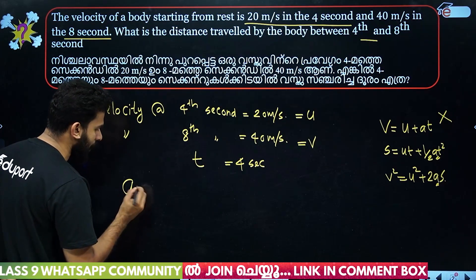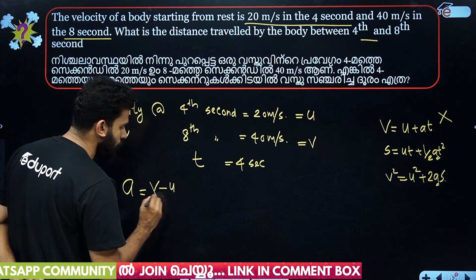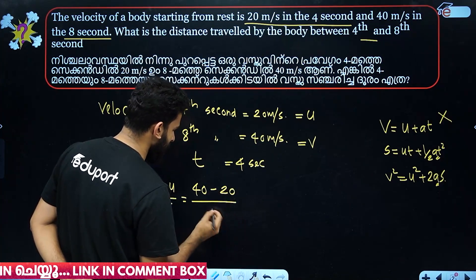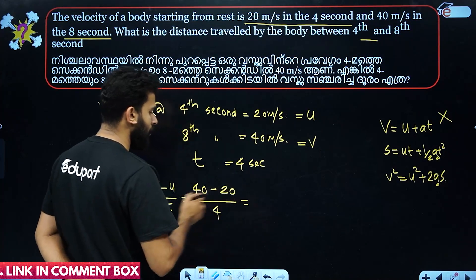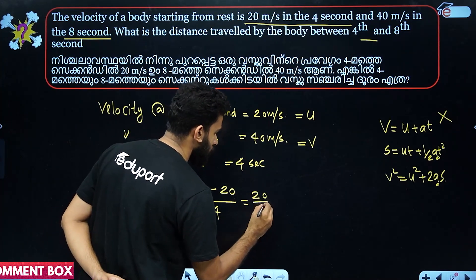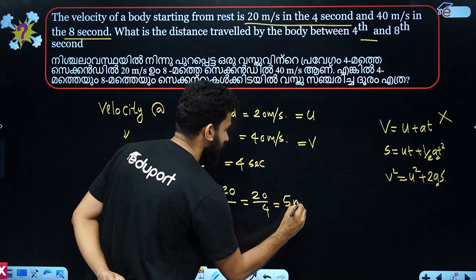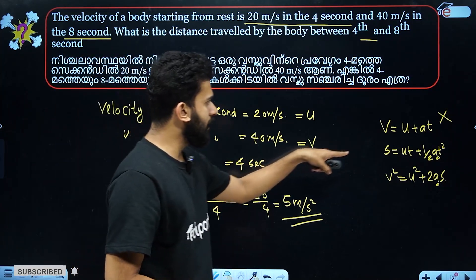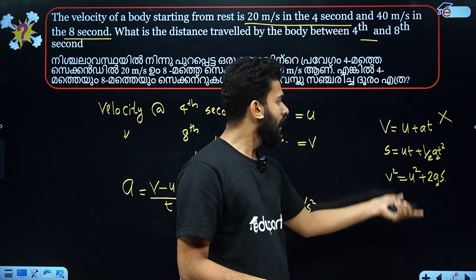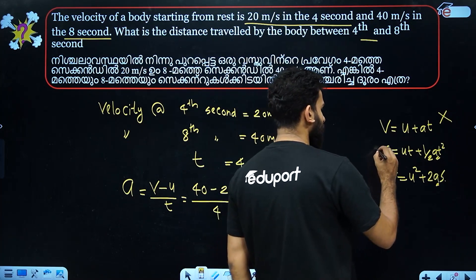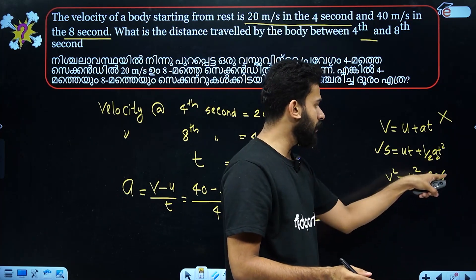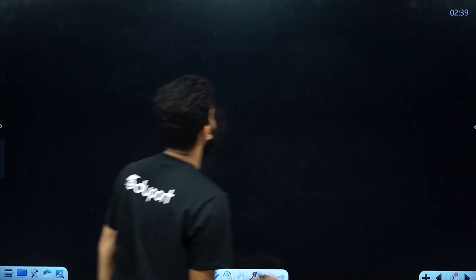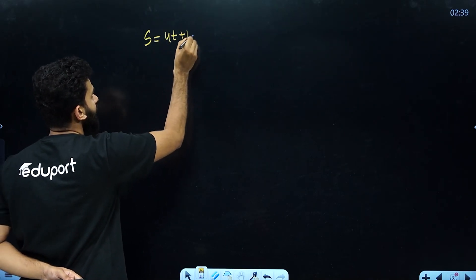The acceleration equation is a = (v − u) / t. v is 40, u is 20, divided by time 4, that is 20 by 4 equals 5 meters per second squared. This is the acceleration. Now we use s = ut + ½at².